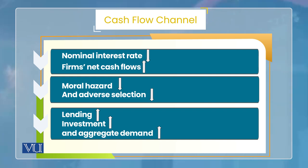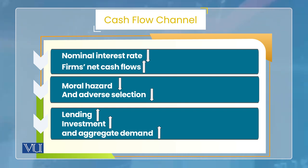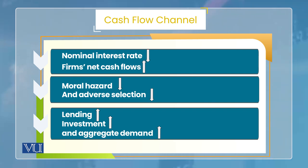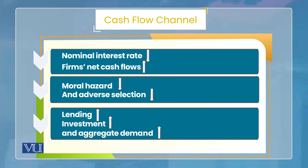Toh iska matlab, agar nominal interest rate kam ho jaye, toh firms ka net cash flow increase ho jata hai. Ab chunke firms ki liquidity badhti hai, toh unke moral hazard ki tendency bhi kam ho jati hai, aur lenders ka adverse selection ka problem bhi thoda kam ho jata hai. Natiijah kya hai: lending zyada hoti hai, investment hoti hai, aur aggregate demand increase ho jati hai.